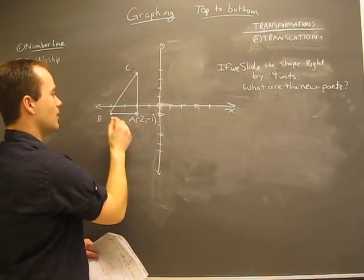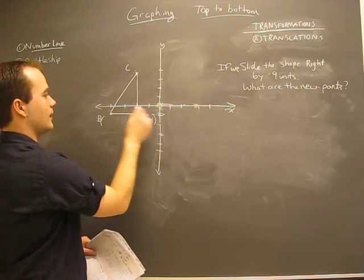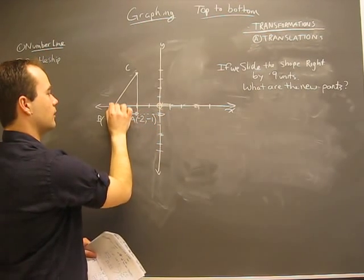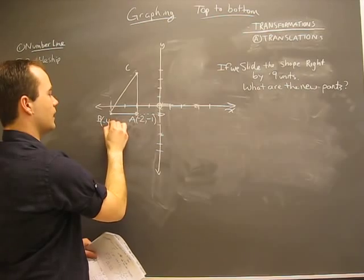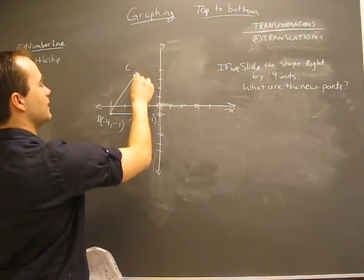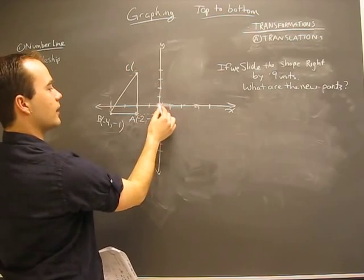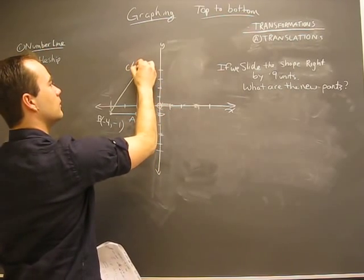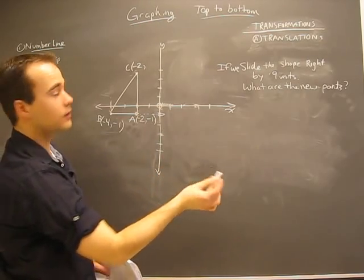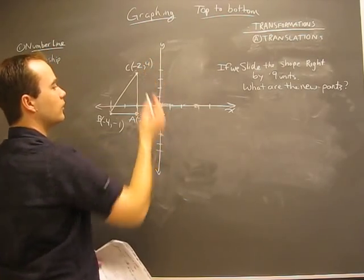That's A. Point B is an x value of negative four and a y value of minus one as well. The height is negative one. Point C has an x value of minus two and a y value of one, two, three, four above zero, so that's four.